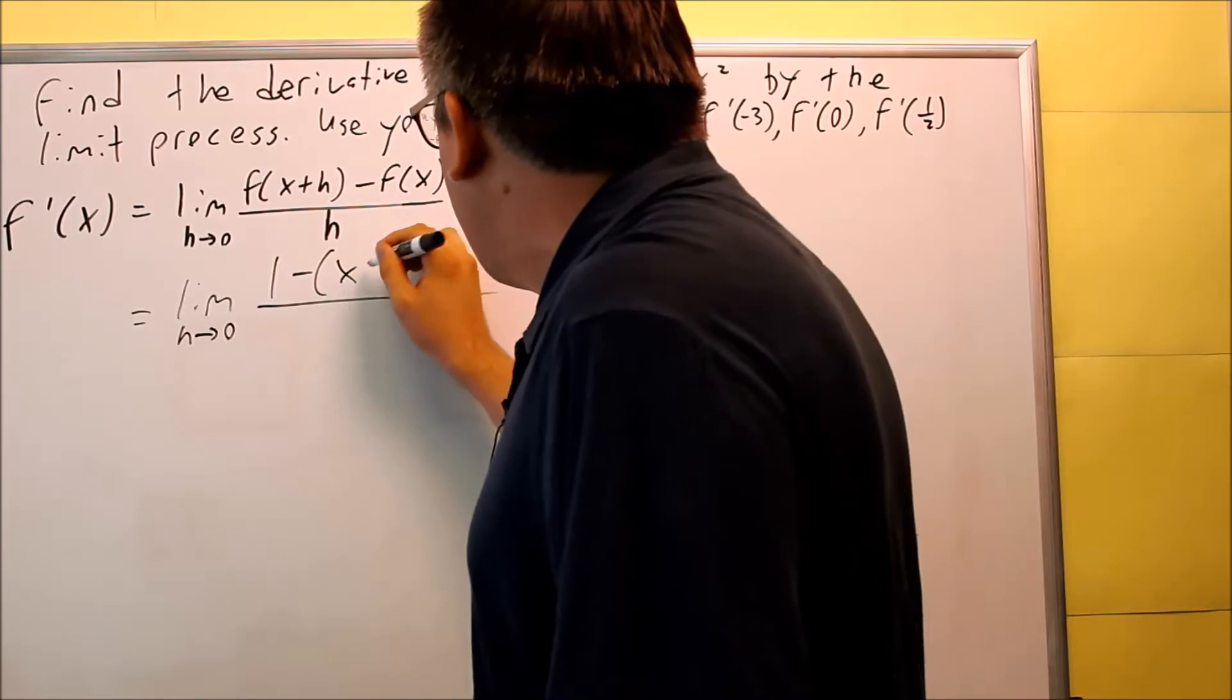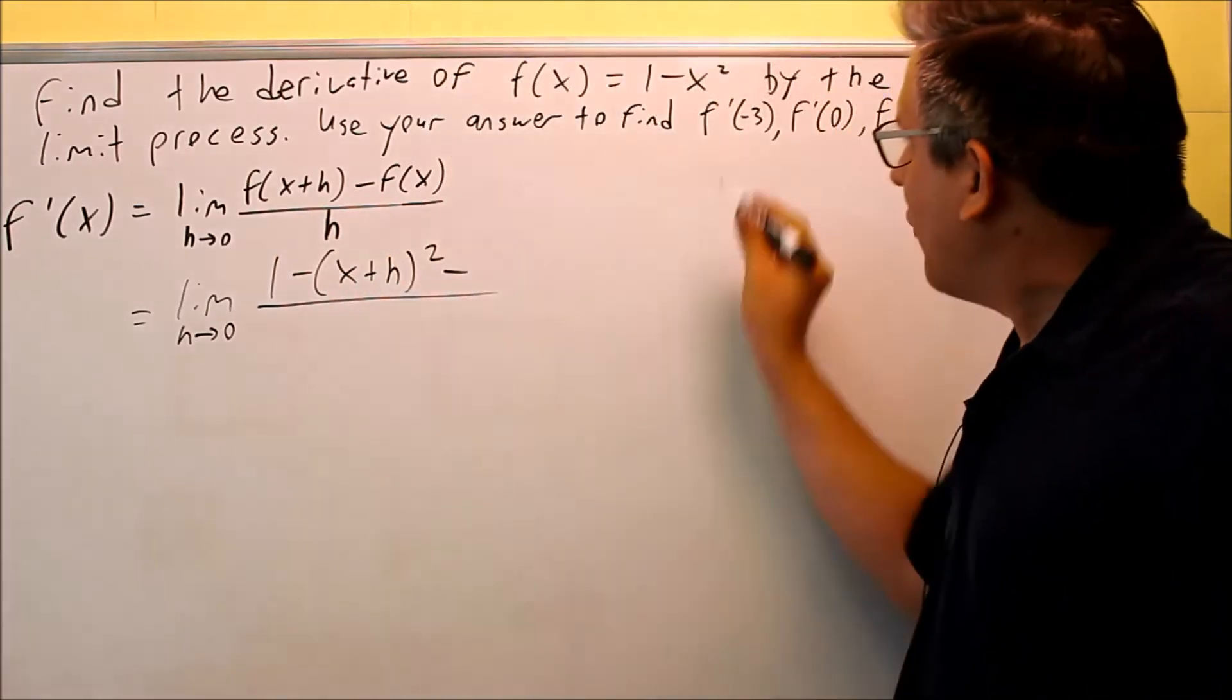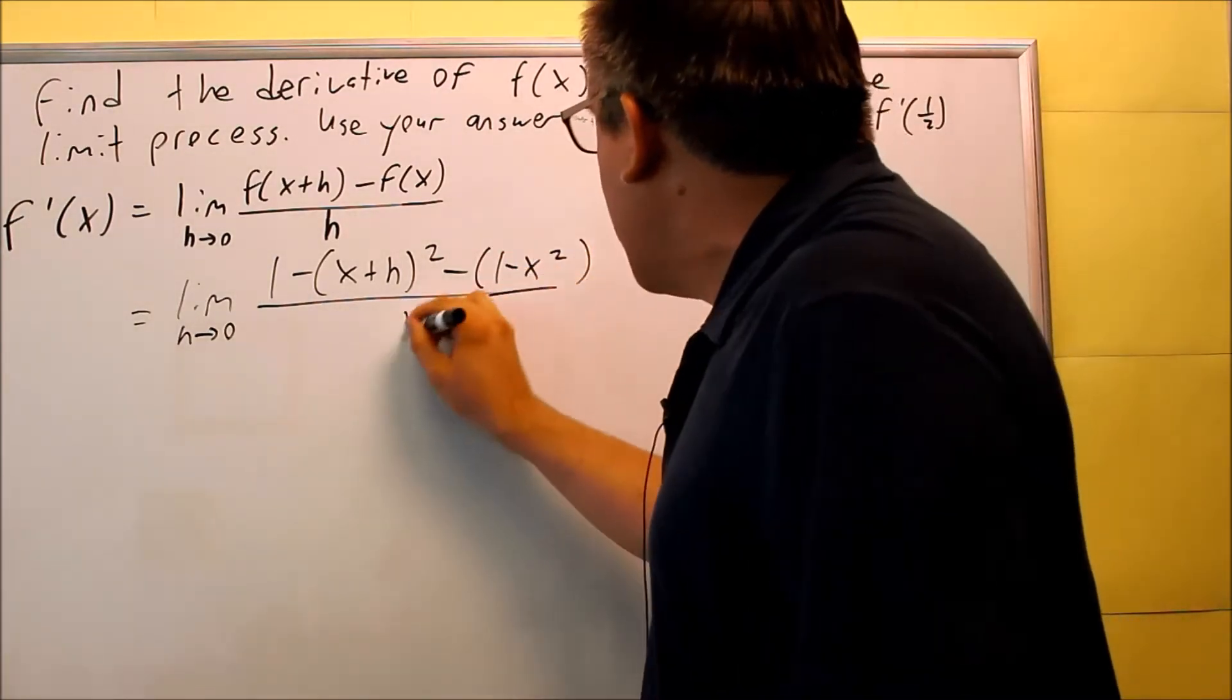It looks like this. We have x plus h goes in there, and then we have minus f of x. Now f of x is the original function, 1 minus x squared, over h.